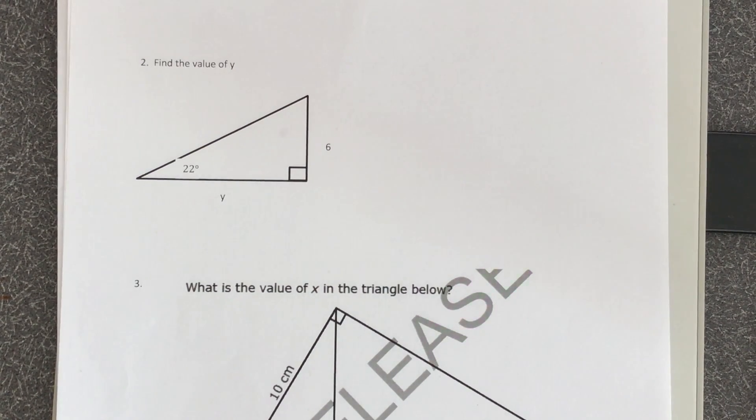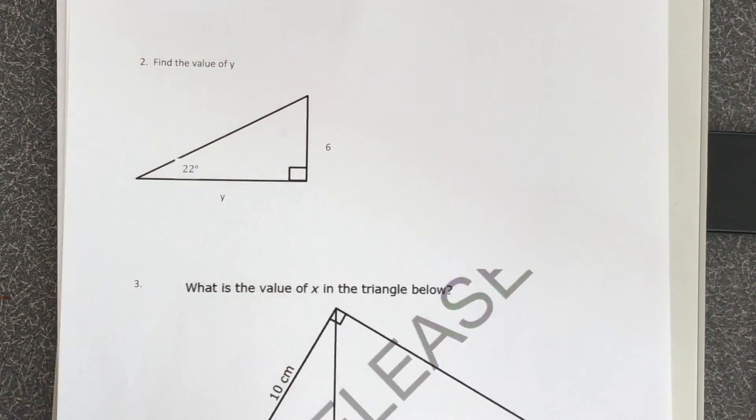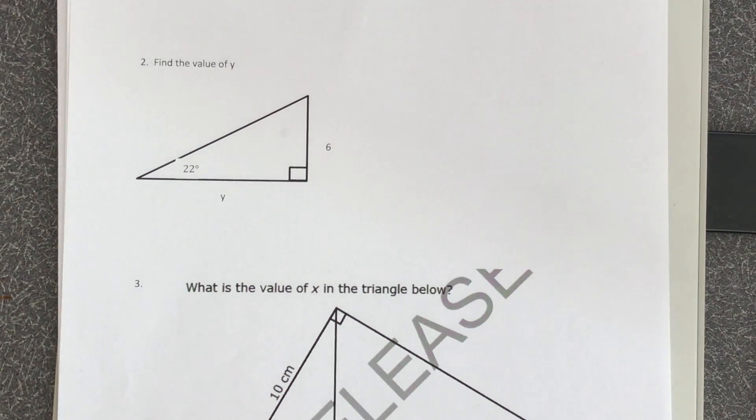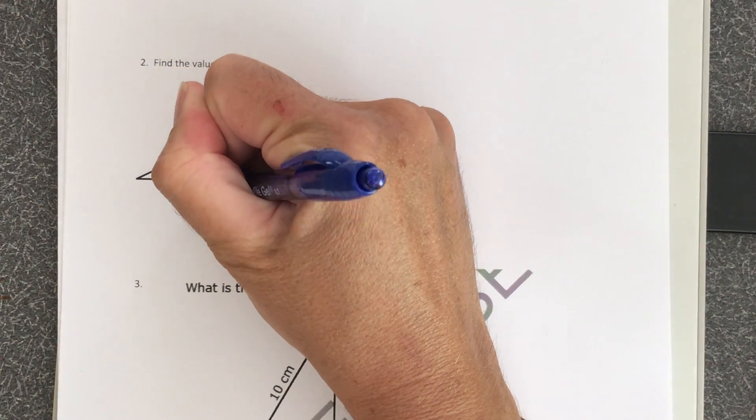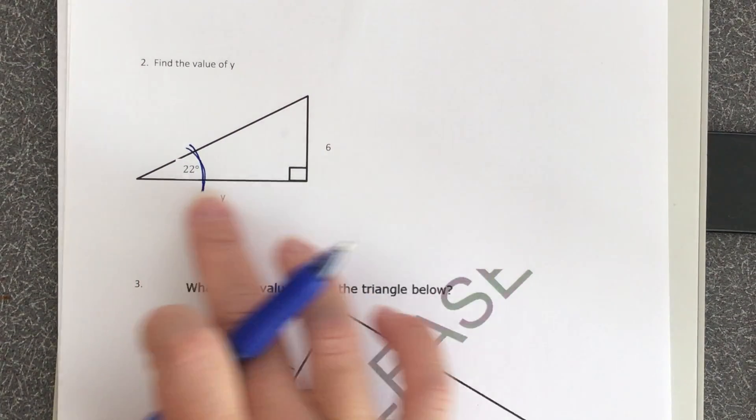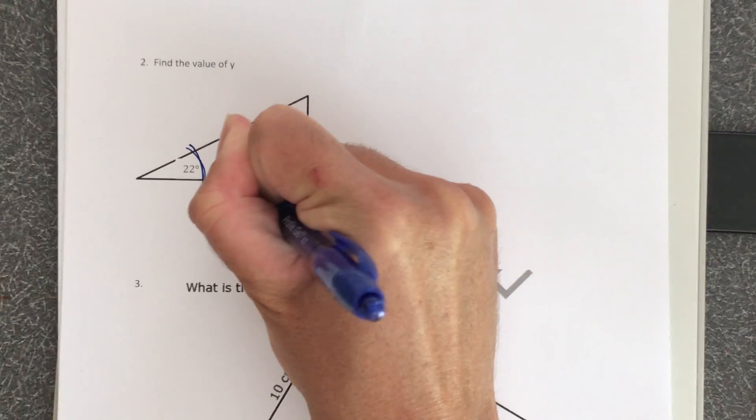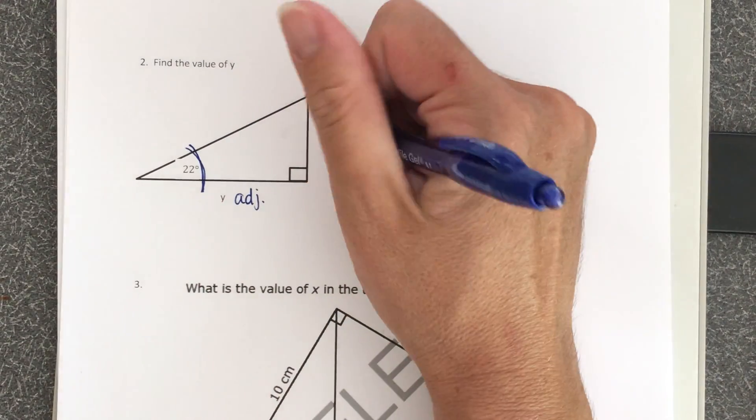So in this example, we need to find y. Remember like I said, always label according to your angle of reference. By labeling, it tells me which ratio I'm going to use. So this is my angle of reference. According to this angle, y is adjacent and 6 is opposite.